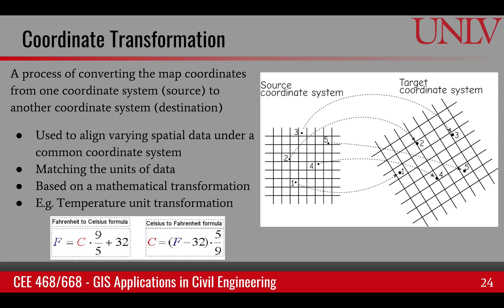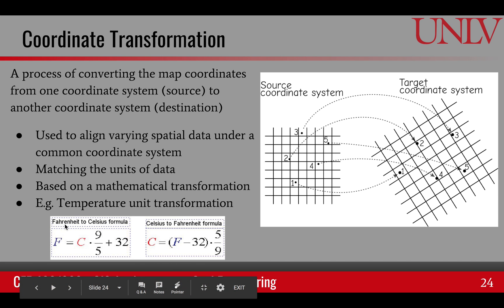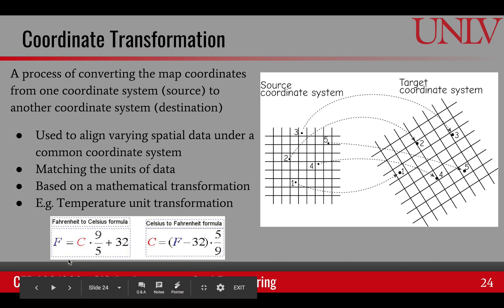Map transformation is usually done by a mathematical formula. It can be a linear formula, a quadratic, or higher-order polynomial. Here's an example: it's not a coordinate transformation, but it's taking temperature from Fahrenheit to Celsius or Celsius to Fahrenheit. You can see it's a mathematical equation which takes C and produces F. It's a straight line — a linear transformation with a slope and an intercept — that takes one coordinate into another coordinate, one unit into a different unit. That's the idea behind map coordinate transformation as well.